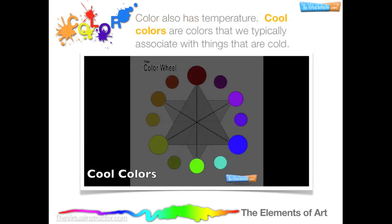Color also has temperature. Cool colors are colors that we typically associate with things that are cold. Cool colors consist of purple, blue-purple, blue, blue-green, and green.